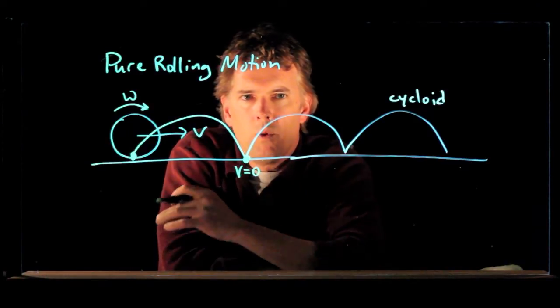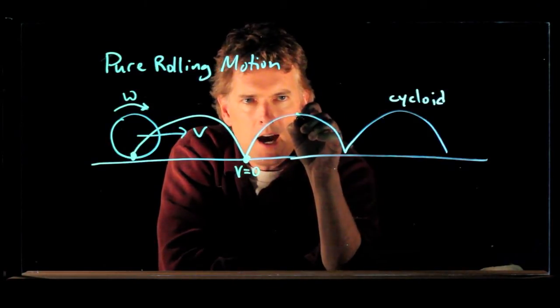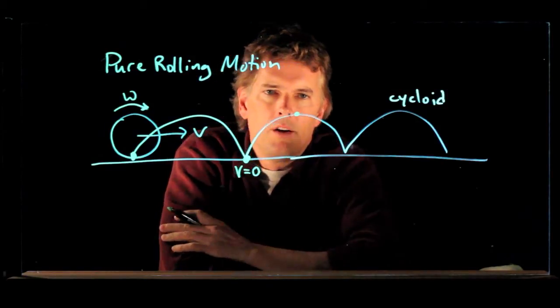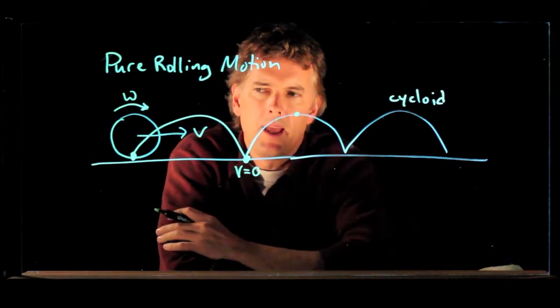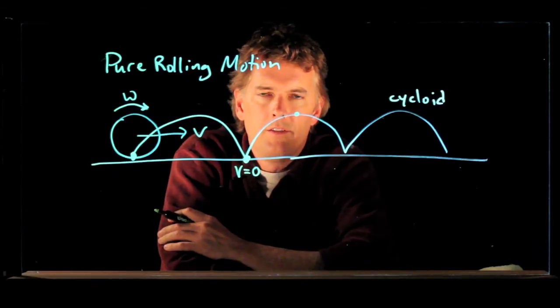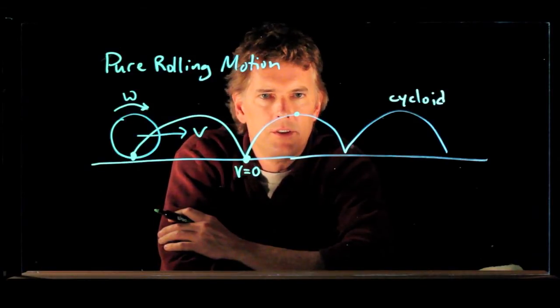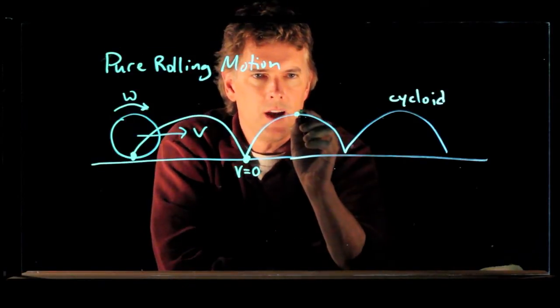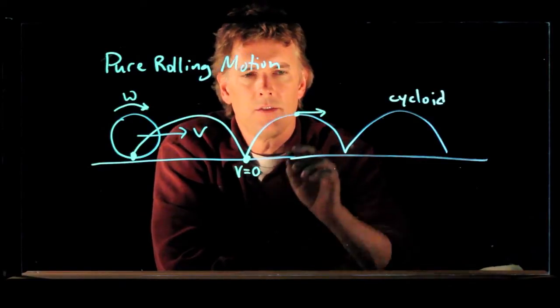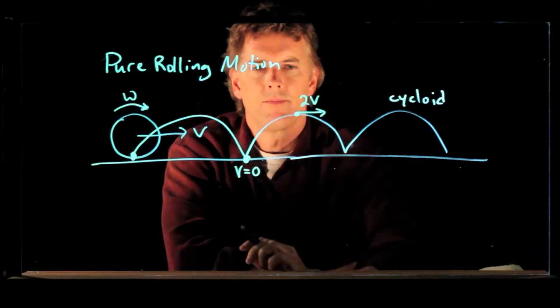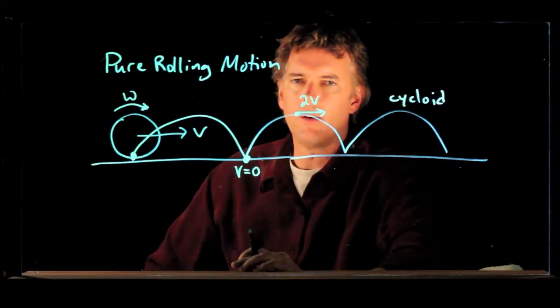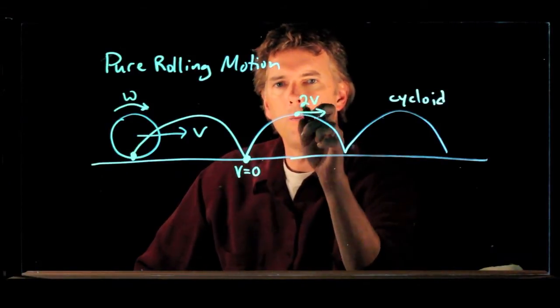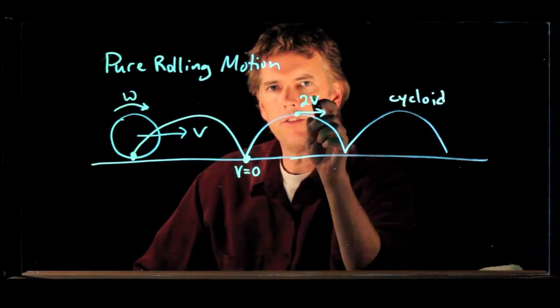Now, when it's up at the top of the arc on the top end of the wheel, what is its speed relative to you? It turns out the speed up there is 2v. If v is the speed of the wheel itself, then when it's up at the top of the motion, it is 2v.